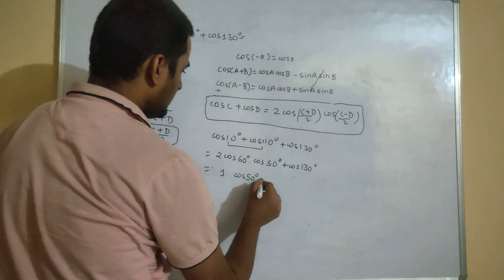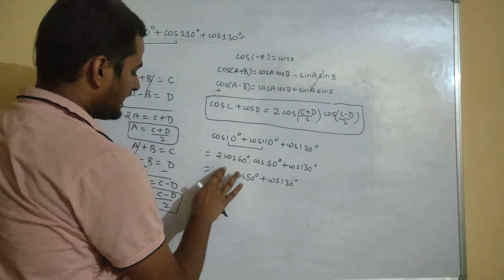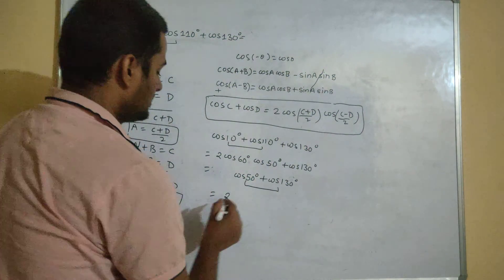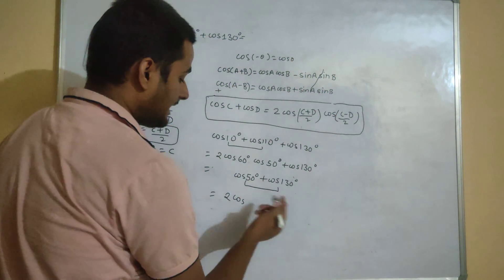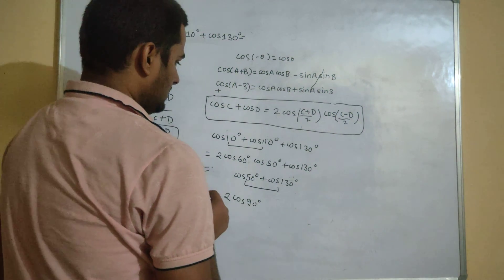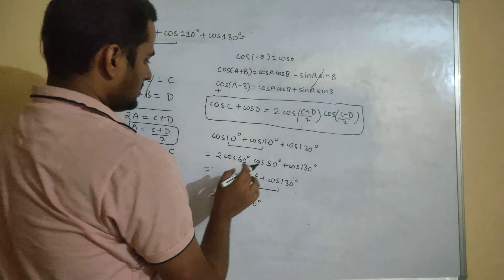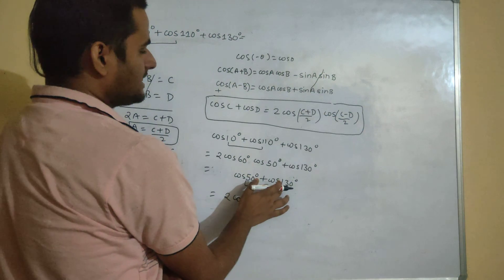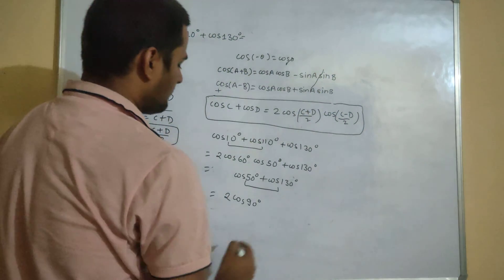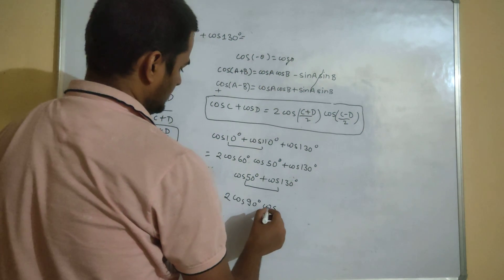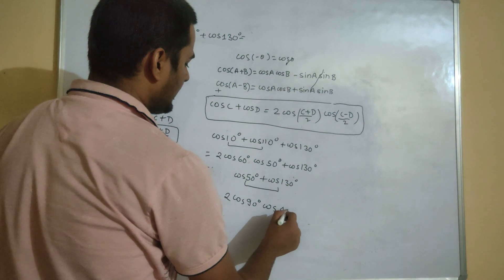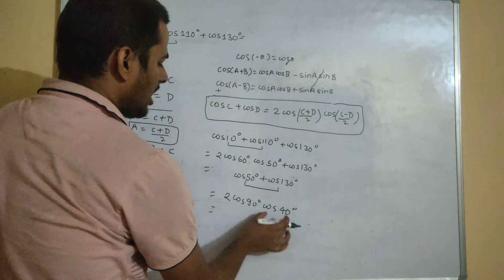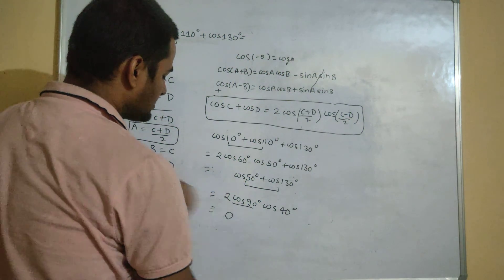Now I apply the formula again to cos 50 plus cos 130. I get 2 times cos of (50+130)/2, which is cos 90, multiplied by cos of (50−130)/2, which is cos(−40) or cos 40. But cos 90 is 0, so this entire expression equals 0.